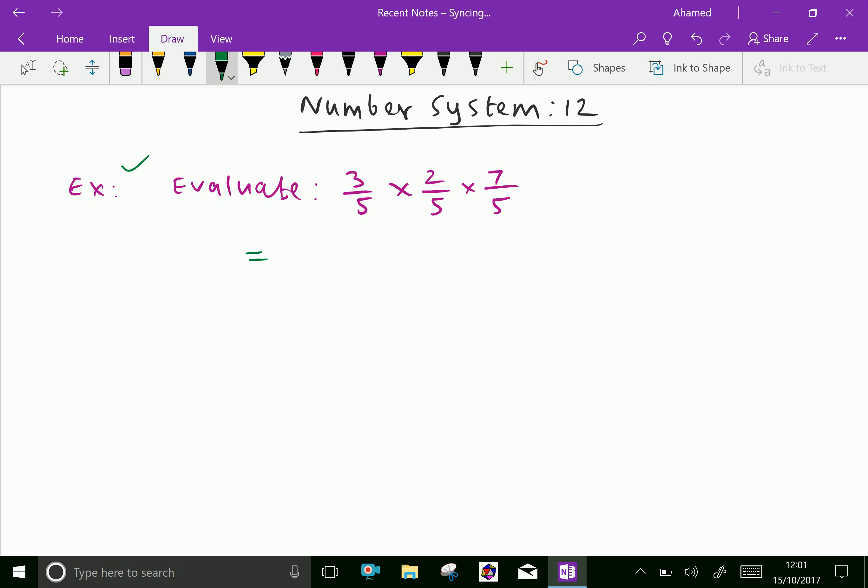3 times 2 is 6, 6 into 7 is 42 over 5 into 5 is 25, 25 into 5 is 125. Further we cannot simplify, this is the final answer, that is 42 over 125.